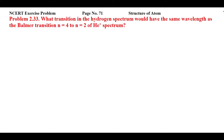This is NCERT exercise problem 2.33 from page number 71 of Structure of Atom. The question asks: what transition in the hydrogen spectrum would have the same wavelength as the Balmer transition n=4 to n=2 of the helium positive spectrum? We have two spectra — helium positive and hydrogen — and we need to find the hydrogen transition with matching wavelength. To find the wavelength, we will use the Rydberg equation.